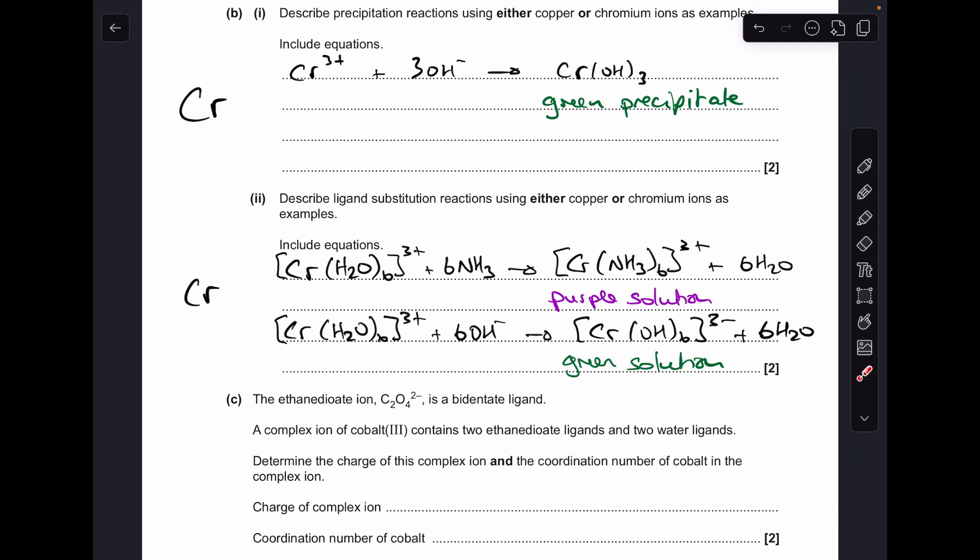And finally, the chromium examples, just in case you've gone for those. Either of these is fine, but they both involve the reaction of the hexa-aqua 3+ ion with an excess of either ammonia or an excess of hydroxide ions. In the case of the ammonia reaction, you get this complex ion here, which has a purple color, so that will be a purple solution. In the case of the excess hydroxide ions, you get this complex ion here, and that's a green solution.